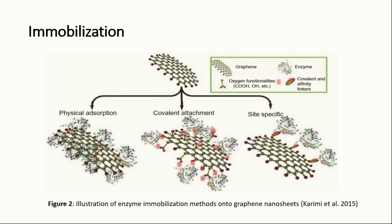Oxygen-containing groups and sp2 domains allow graphene and its derivatives to attach to other molecules through covalent bonding and non-covalent bonding. These properties make graphene nanomaterials perfect supports for biomolecule immobilization.